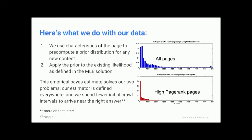This gives you a lot of leverage. For any particular page, I can say for high PageRank pages, pre-create a database of prior distributions. High PageRank pages tend to look like this; French pages on a particular host created during this time window tend to look like that. I can use this to fix some of the problems of my maximum likelihood estimator — applying this prior to the existing likelihood defined in the MLE calculation to get an empirical Bayes estimate, which solves two problems: it's defined everywhere, and you need far fewer initial crawl intervals to arrive at an approximately correct estimate.